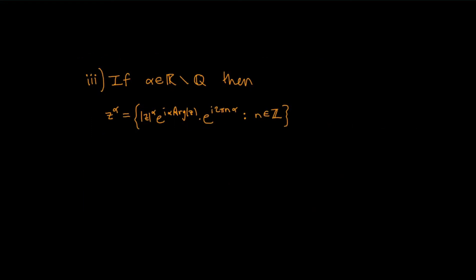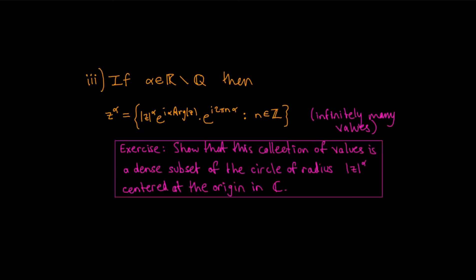Finally, if α is a real but irrational number, then the collection of numbers e^(i·2πnα) as n runs through the integers is an infinite subset of complex numbers, so z^α is actually an infinite set. A more challenging exercise: show that the collection of values in this set is actually a dense subset of the circle of radius |z|^α centered at the origin.